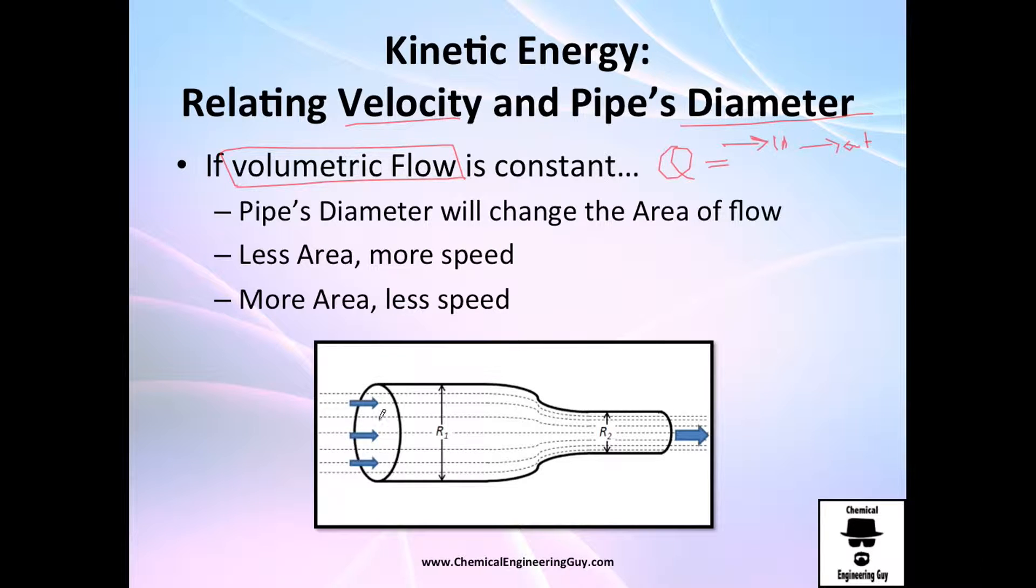So whenever you change the diameter, you will change the area of flow. That means less area in this point right here, R2. You will have more speed. Why?